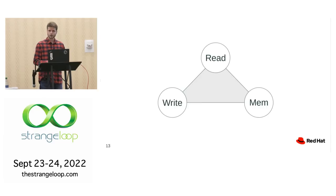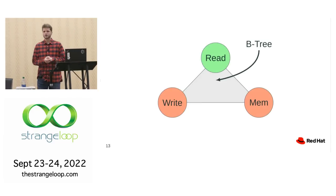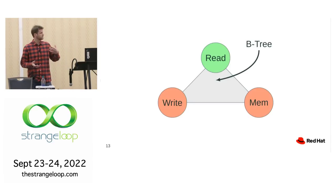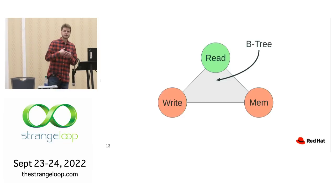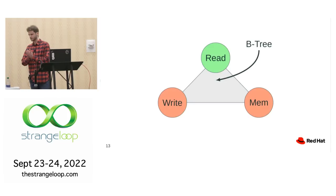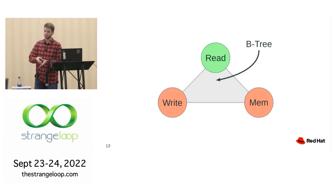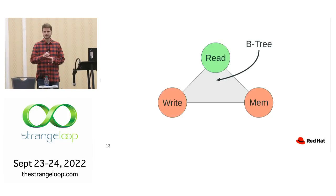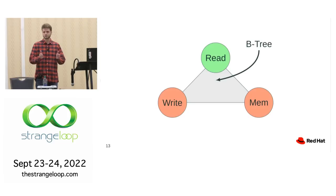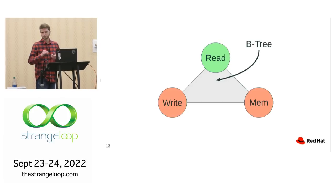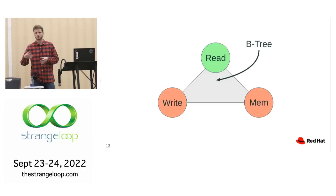To answer this, let's look at where B-trees sit in the RUM space. They're located pretty close to the read corner — B-trees are very good for read workload — but memory footprint could be better, and update workload could also be more efficient. B-trees are a very old and robust data structure; people know all the properties and trade-offs. So it's tempting to take B-trees for new use cases and adjust them slightly — shift the trade-off to make them more write-optimized or more memory-friendly. Plus, emerging hardware also needs to be adapted.